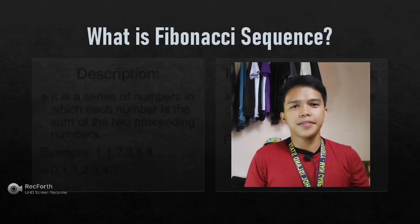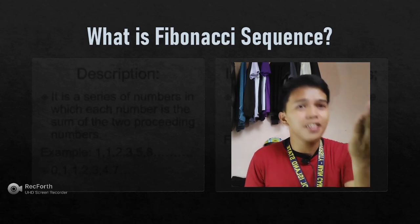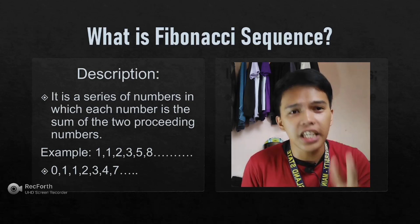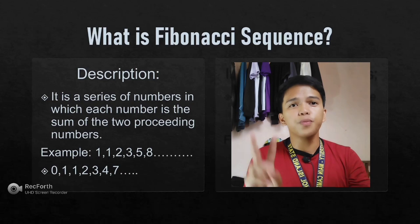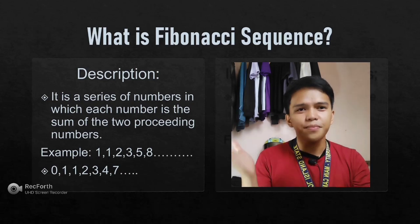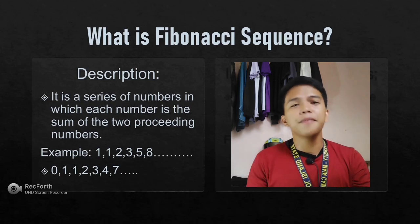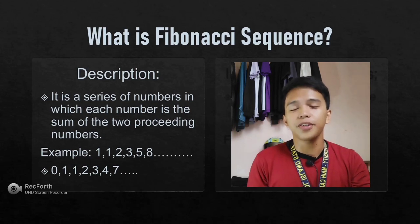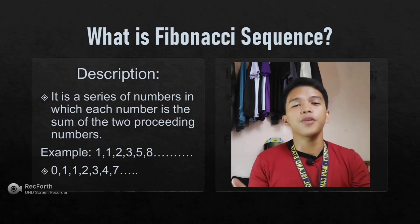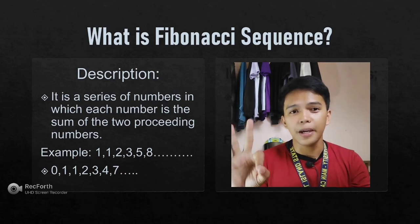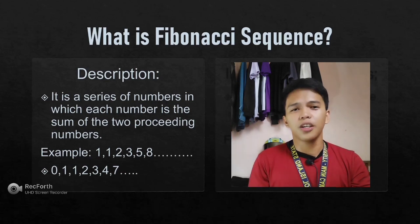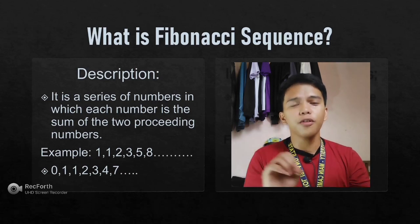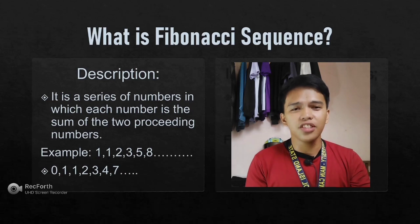What is the Fibonacci sequence? The Fibonacci sequence is a series of numbers in which each number is the sum of the two preceding numbers. For example: 1, 1, 2, 3, 5, 8. If you add 1 plus 1, it equals 2. Add 2 plus 1, it equals 3. Add 3 plus 2, it equals 5. Add 5 plus 3, it equals 8. All of these numbers are called the Fibonacci sequence.